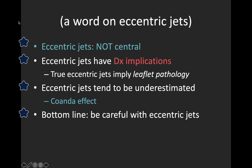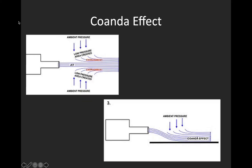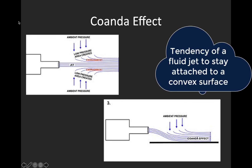The bottom line is to be careful with eccentric jets. Be wary of calling something an eccentric jet when your view or angle isn't quite lined up perfectly — try to confirm in several views that the jet is truly eccentric. And be aware that you'll likely underestimate their severity with color Doppler. The Coanda effect is essentially the tendency of a fluid jet to stay attached to a convex surface, so an eccentric regurgitant jet will hug the wall of the atrium and entrain red blood cells from only one side, making the jet appear smaller.